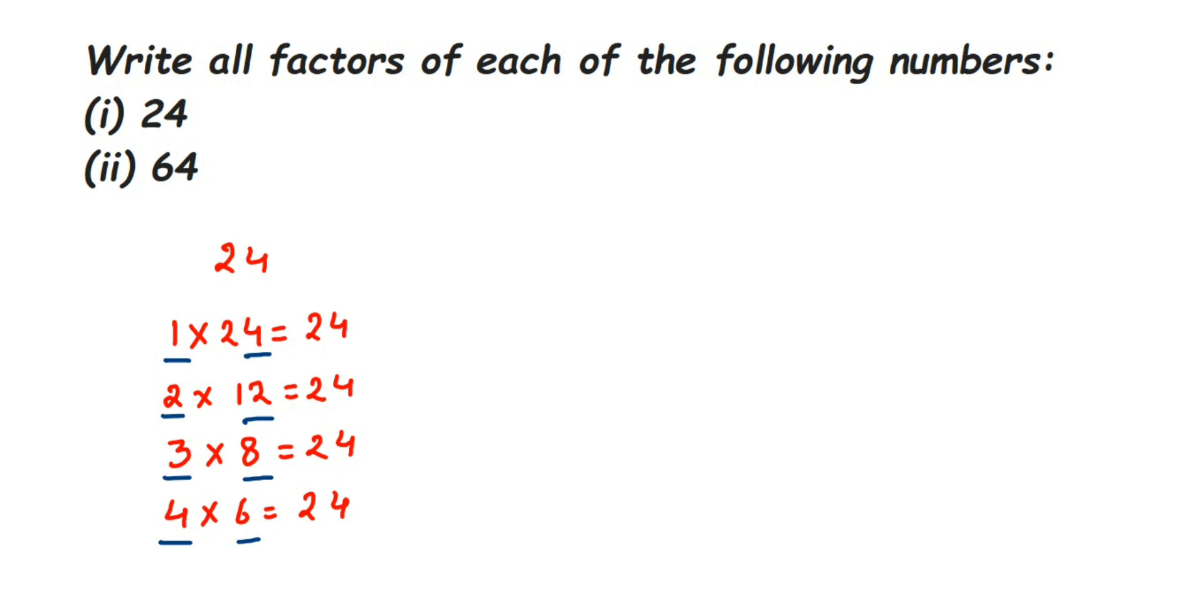So let me conclude. Therefore, factors of 24 are: 1, 2, 3, 4, 6, 8, 12, and 24. So that's it, that's the first question. I hope it's clear how to find out factors. Now let's move on to the next question.